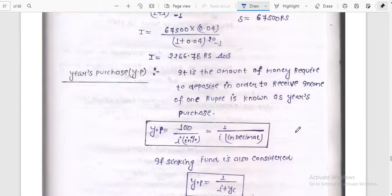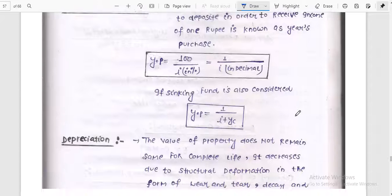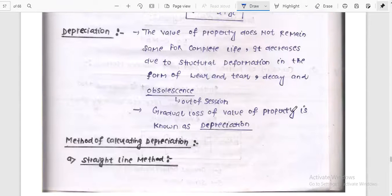Year's purchase. The amount of money required in order to deposit to receive income of 1 rupee is known as year's purchase, which is 100 divided by i. Then depreciation is important. The value of property does not remain same for complete life. It decreases due to some structural deformation in the form of wear and tear, decay, and that is nothing but depreciation.